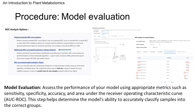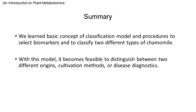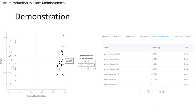Next, we'll assess the performance of our model using appropriate metrics such as sensitivity, specificity, accuracy, and AUC ROC. These metrics will help us determine the model's ability to accurately classify samples into the correct groups. Today's lecture outlined a procedure for classification modeling, demonstrating how metabolomics can logically and scientifically classify based on biomarkers. This methodology is applicable in distinguishing between various origins, cultivation methods, or disease diagnostics, with potential applications in other agricultural areas. In the next video, I will provide a demonstration on how to develop a classification model using MetaboAnalyst.